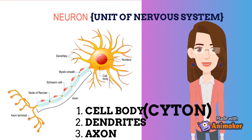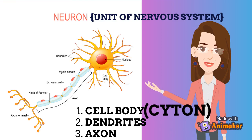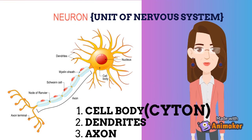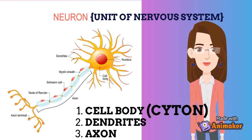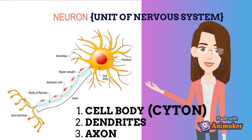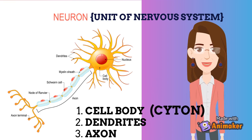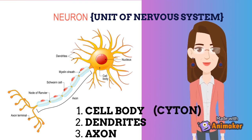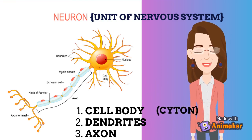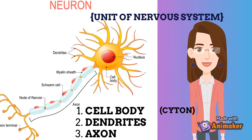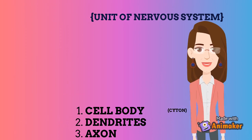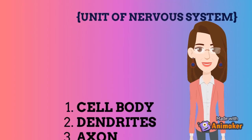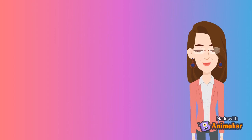The myelin sheath shows gaps throughout its length called the nodes of Ranvier. Some axons may have side branches called collaterals. The end portion of the axon has a swollen bulb-like end which stores certain chemicals for neurotransmission. Axon terminals are closely placed near the dendrites of another neuron, but they are not connected.